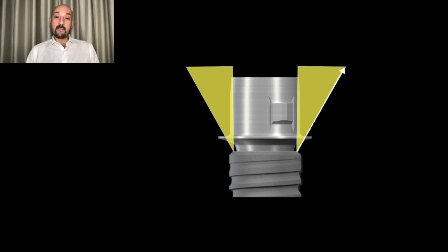This type of abutment might take your emergence profile outside this safety zone from the beginning. What we want to design is an emergence profile that's more narrow, stays within these yellow triangles, and gradually flares up to the cervical margin.